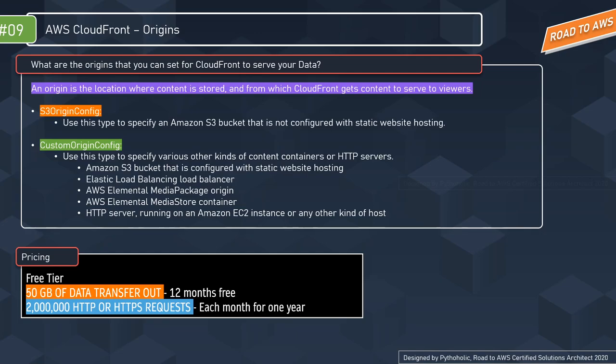You can also use Elastic Load Balancing and specify a load balancer as your origin. AWS Elemental MediaPackage, which reliably prepares and protects your videos for delivery over the internet, is another option. Additionally, you can use an HTTP server running on an Amazon EC2 instance or any other kind of host. Amazon gives you a free tier account with 50 GB of data transfer out for 12 months and 2 million HTTP requests each month for one year — that's a great opportunity to start hosting applications on AWS.